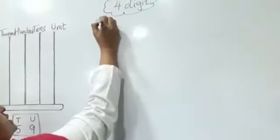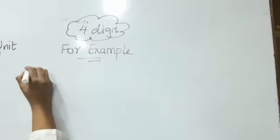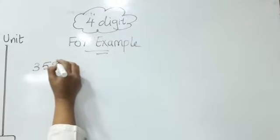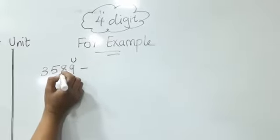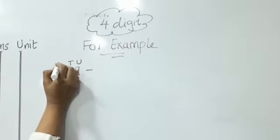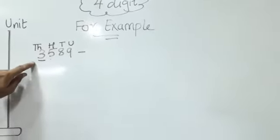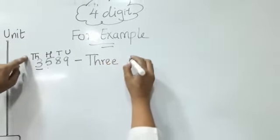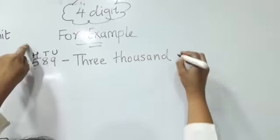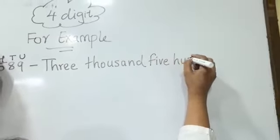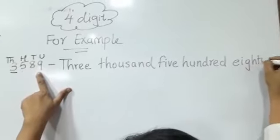Now let's see another example — the number 3589. 9 is on the unit place, 8 is on the tens place, 5 is on the hundreds place, and 3 is on the thousands place. We write: three thousand, five hundred, eighty nine. That is three thousand five hundred eighty nine.